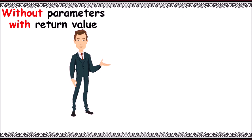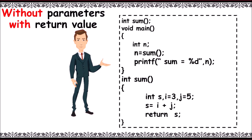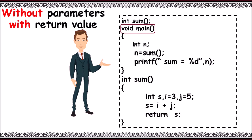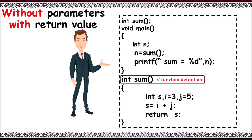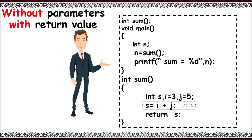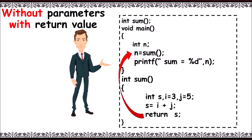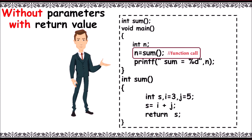Next comes without parameters with return value. You can see a function named sum without parameters, and you can also observe a return statement present in the function as it returns int z value. We write return type as int. First, function prototype, main, and declare n to store the return value. Function call sum, then control goes to function definition int sum. Variable declaration: s, i, j are declared. s is equal to i plus j, that is 3 plus 5 — 8 is stored in s. Then return s. The return value is returned to calling function and 8 is stored in n. Then printf prints: sum is equal to 8.